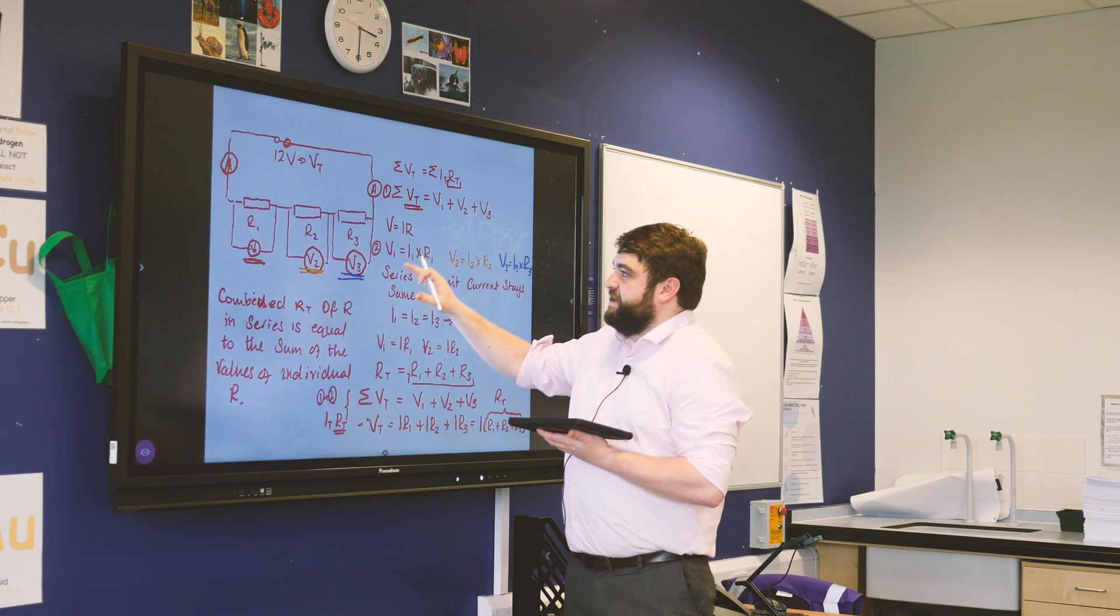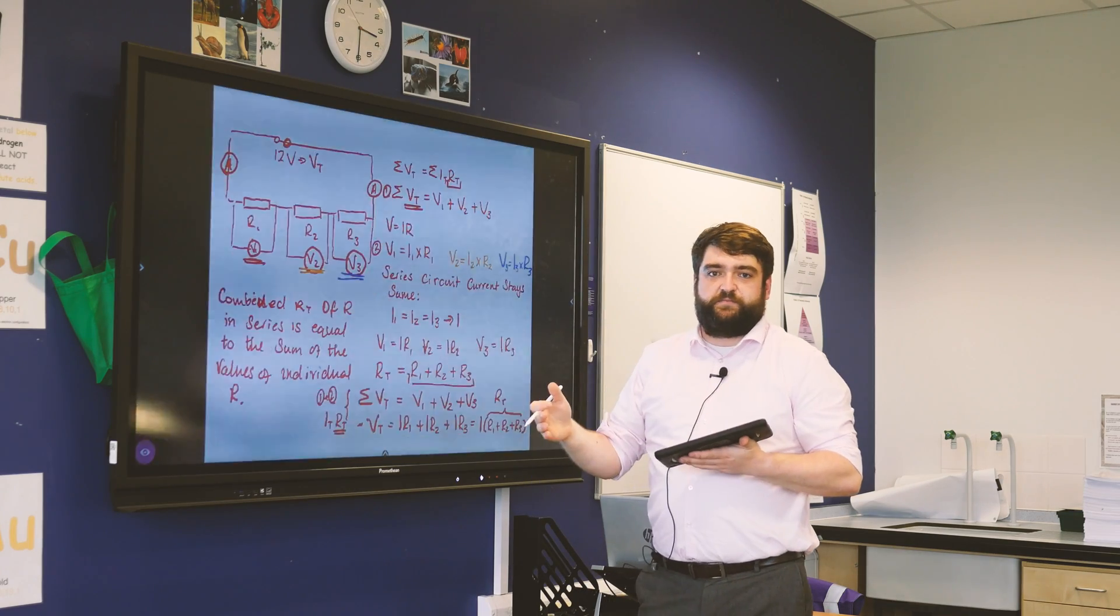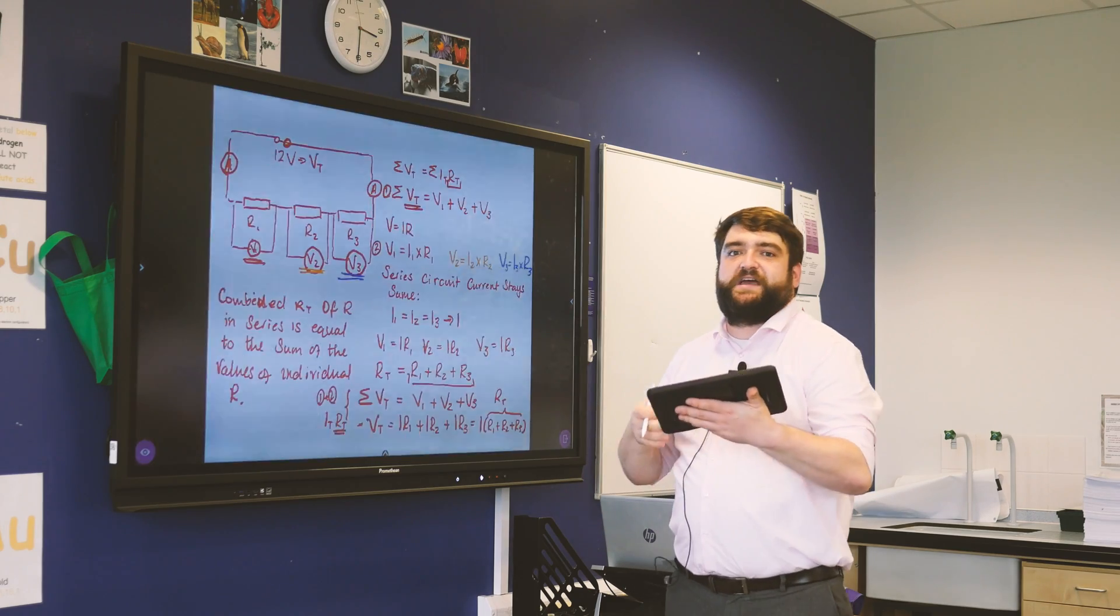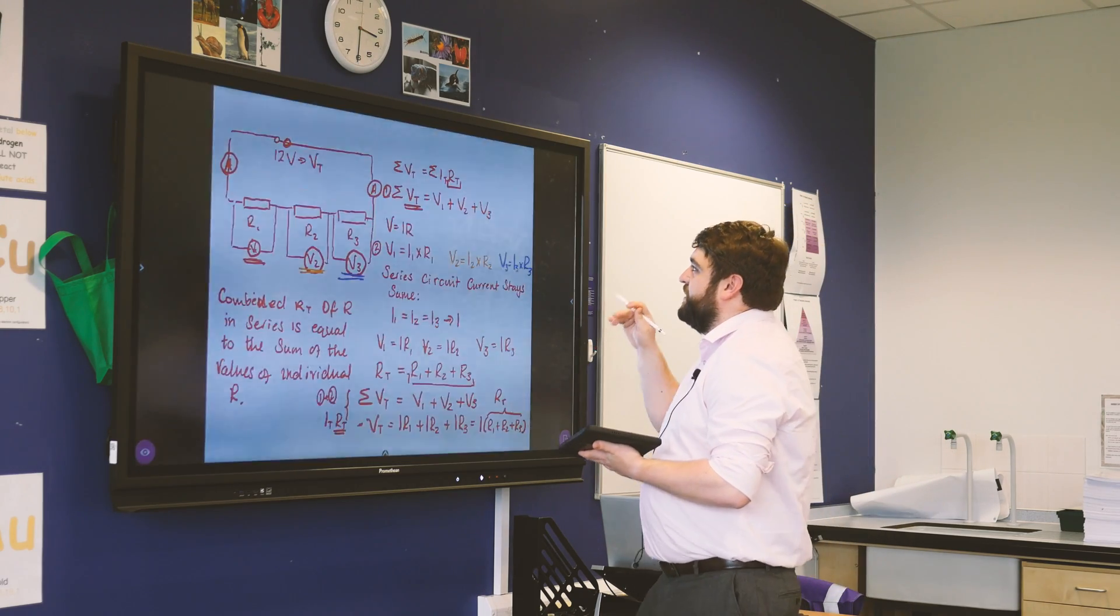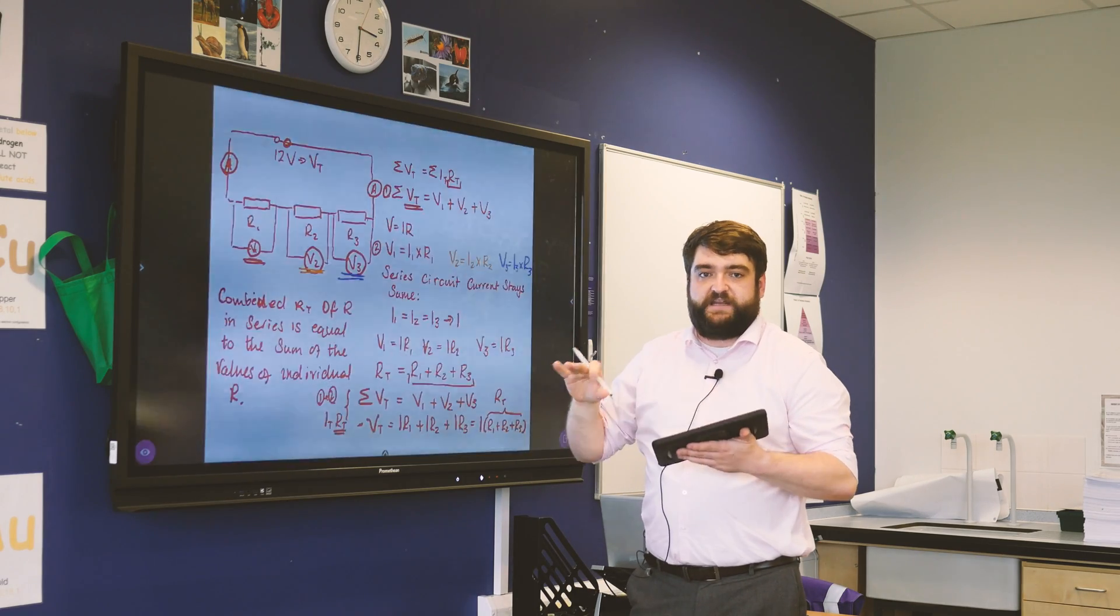We went through the steps of being able to say, right, this is R1, this is R2. What would we expect of the combined resistance within this part of the circuit, what would we expect of the current, what would we expect of potential difference? We were able to go through the equation step-by-step and really quite slowly.